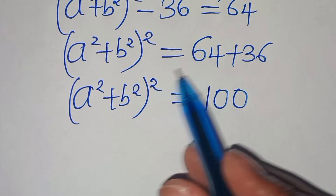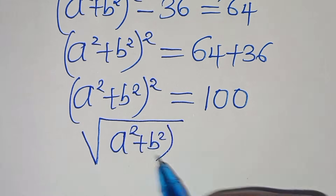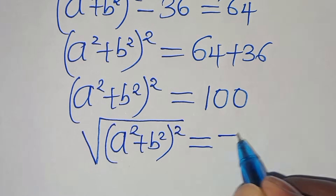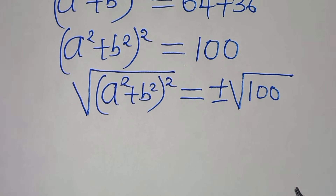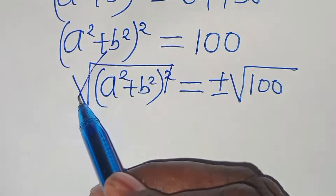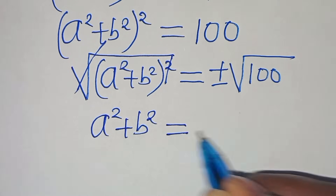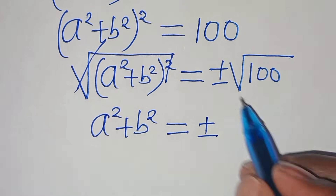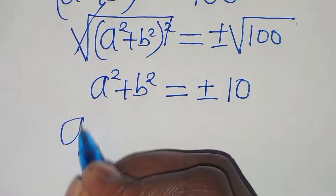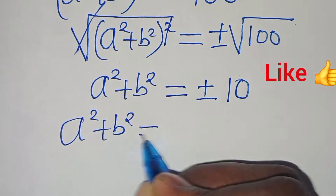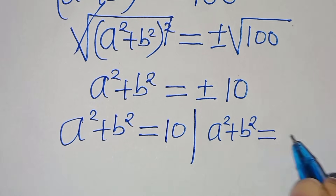To solve for a squared plus b squared, we take the square root of both sides: the square root of (a squared plus b squared) squared equals plus or minus the square root of 100. This gives a squared plus b squared equals plus or minus 10. So we have two values: a squared plus b squared equals 10, and a squared plus b squared equals minus 10.